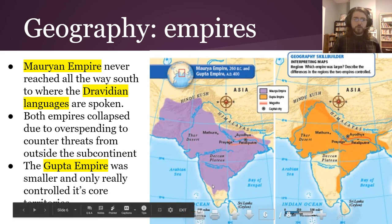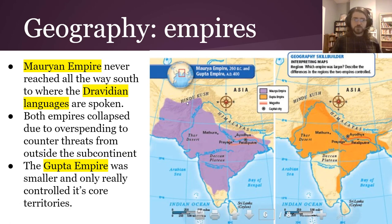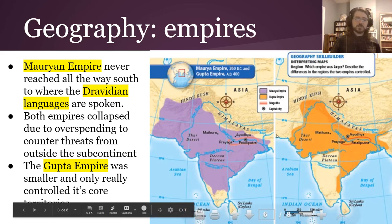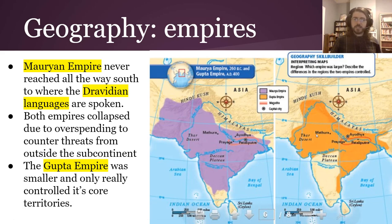Both empires collapsed over time as a result of pressure from outside invaders, most likely through these mountain pass areas. The Gupta Empire was smaller and only really controlled its core regions — it didn't have as much political control over all the kings and rulers in the outlying regions.